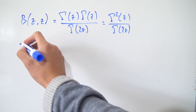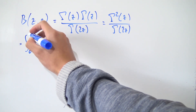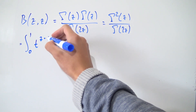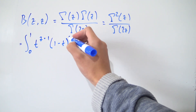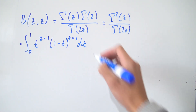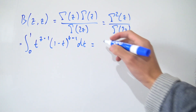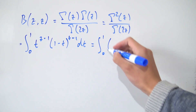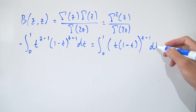If we rewrite our beta function in terms of an integral — I've derived this in a previous video, linked in the description — it's the integral from 0 to 1 of t to the z minus 1 times 1 minus t to the z minus 1, dt. Notice we have the same power on both terms, so we can factor it out as the integral of t times (1 minus t), all raised to the z minus 1, dt.